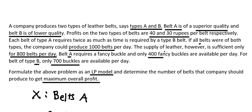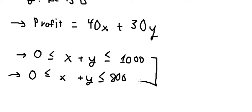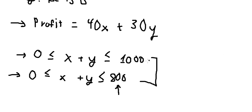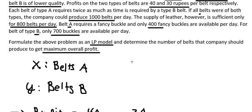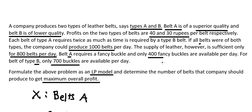The supply of leather is sufficient for only 800 belts per day, so we have the constraint X plus Y less than or equal to 800. Additionally, belt A has a maximum of 400 units, so X ≤ 400, and belt B has a maximum of 700 units, so Y ≤ 700.